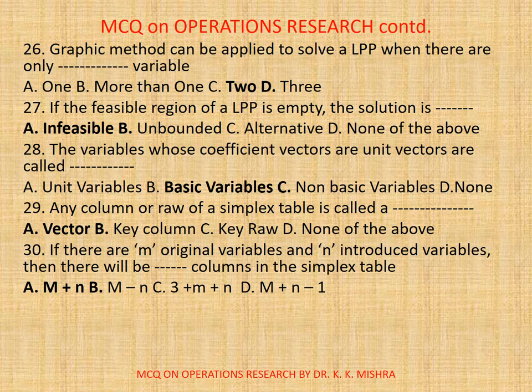Question 28. The variables whose coefficient vectors are unit vectors are called Dash. A, Unit Variables. B, Basic Variables. C, Non-Basic Variables. D, None. The correct option is B, Basic Variables.